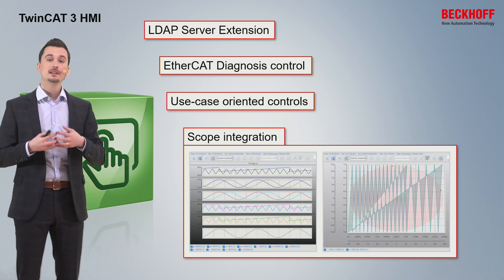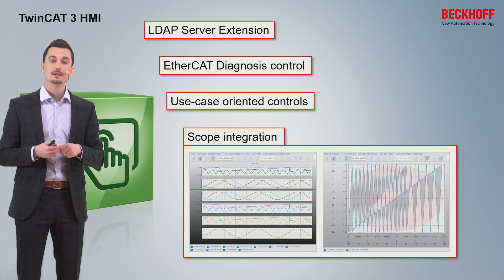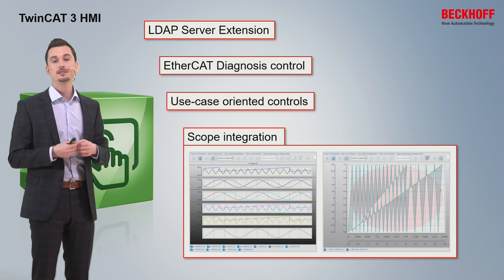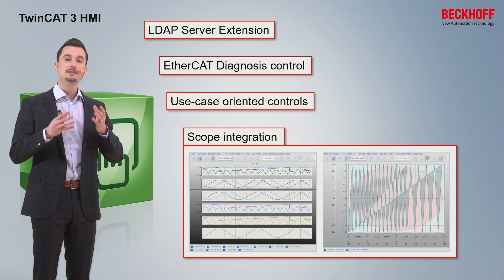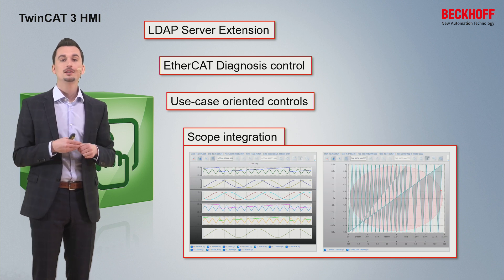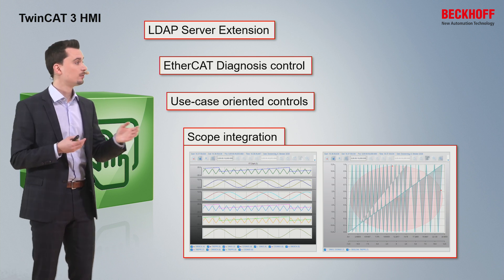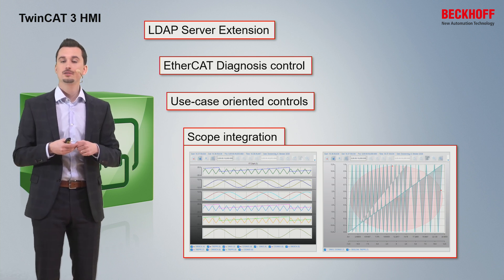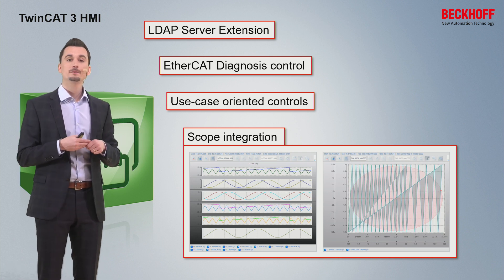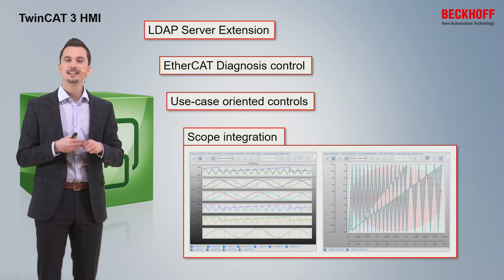In the second quarter of this year, we are planning to add a scope integration into the TwinCAT HMI, which means there is going to be a specific scope control which you can use to display a standard TwinCAT 3 scope within your HMI client. You can easily use existing scope configurations, and there is a toolbar on top where you can start and stop recording and also zoom in and zoom out. This scope integration only needs a TwinCAT HMI license and a scope license.